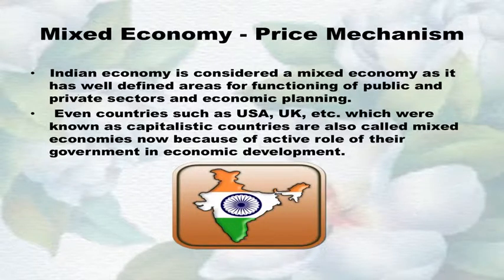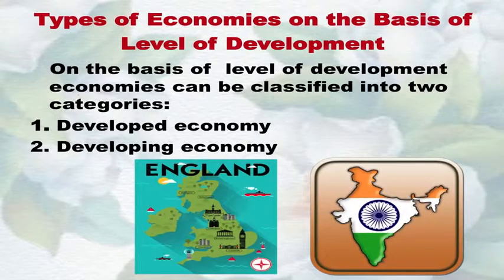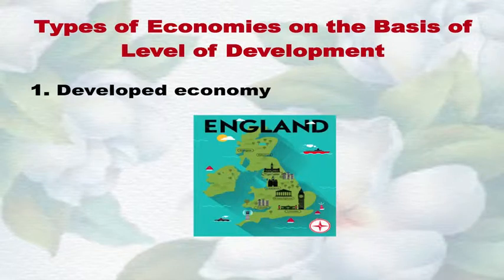Types of economies on the basis of level of development: On this basis, economies can be classified into two categories — Number one, developed economy; Number two, developing economy. Countries are labeled developed or rich and developing or poor on the basis of real national and per capita income and the standard of living of their population. Developed countries have higher national and per capita income, high rate of capital formation, high savings and investment, highly educated human resources, better civic facilities, health and sanitation facilities, low birth rate, low death rate, low infant mortality, developed industrial and social infrastructure, and a strong financial and capital market. In short, developed countries have a high standard of living.